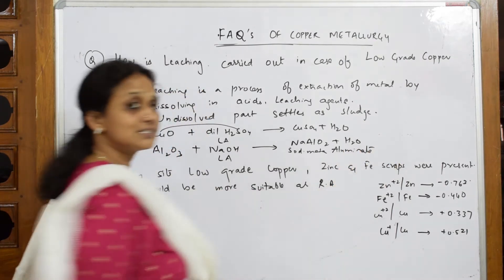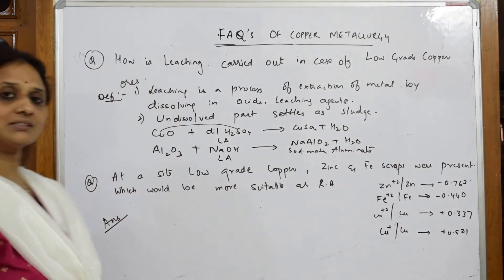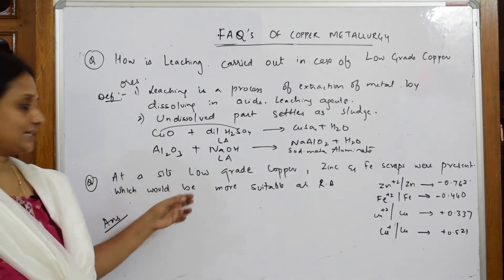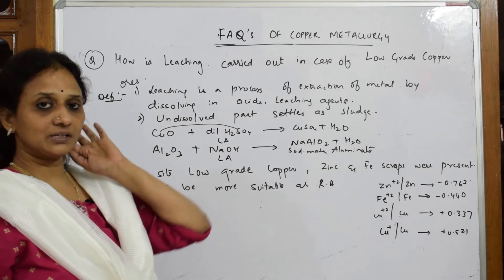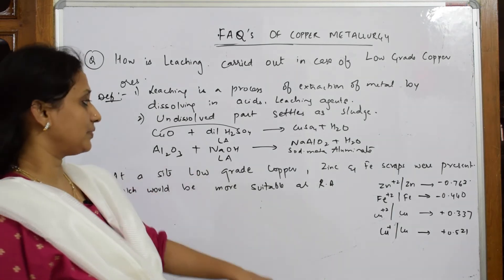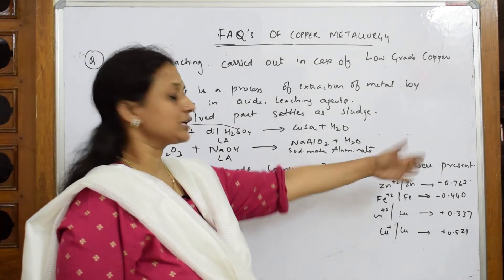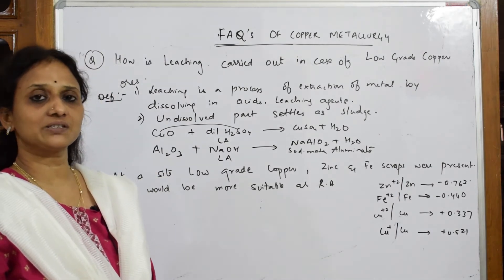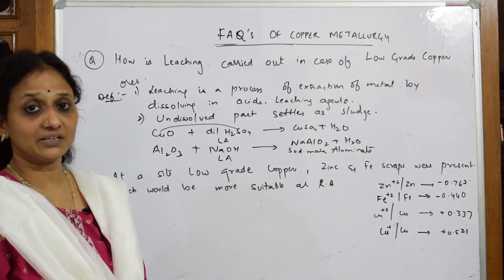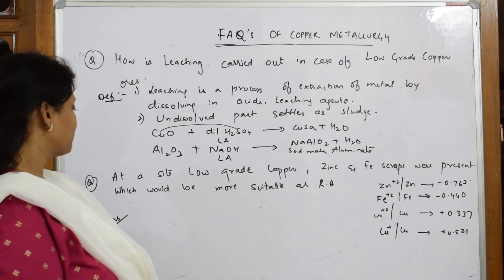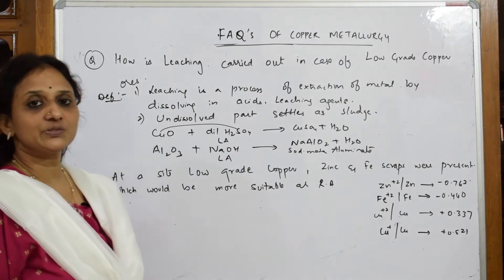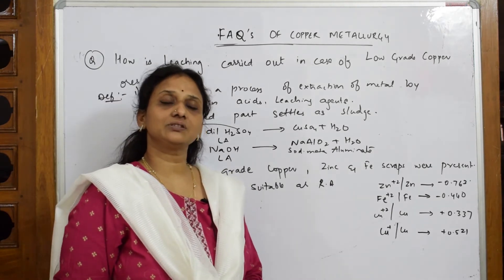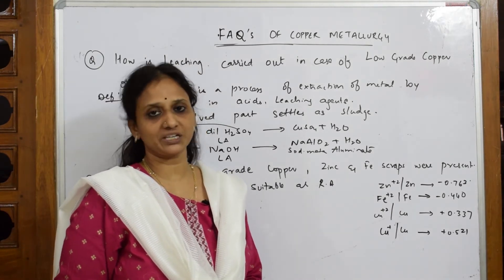You have to write your answer like that. Then only your complete one mark is allotted to this question. Now the next question: at a site, there is low-grade copper, and zinc and iron scraps are also kept. We use scraps because the surface area is very high and the reactivity will also be very high. Which would be a suitable reducing agent? The criteria for deciding the reducing agent is electrode potential values.